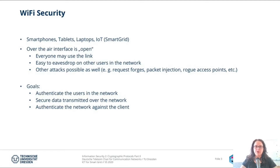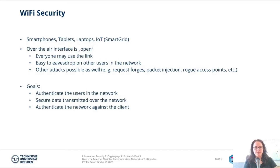The problem with the connection of such devices via Wi-Fi is that over-the-air interfaces are generally open. This means without any measures taken, everyone may be able to connect to such a network. From within the network, it is easy to eavesdrop on the messages sent. Other attacks are possible as well — for example, so-called rogue access points, where someone sets up an access point with the exact same name as a network you might already know, then intercepts the packets you sent. This means the attacker may be able to read and also alter the packets.